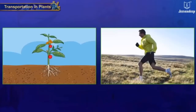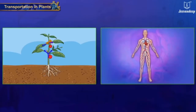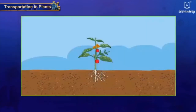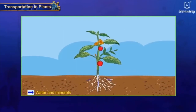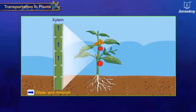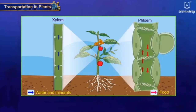As plants are stationary and perform fewer metabolic activities, their energy requirement is less and hence the transportation system is less developed compared to human beings. Conducting tissues like xylem and phloem carry out transportation in plants. Water and minerals absorbed by root hairs are transported through xylem bundles, whereas food manufactured by leaves is translocated all over the plant with the help of phloem bundles. All parts of the plant are interconnected with these conducting tissues.